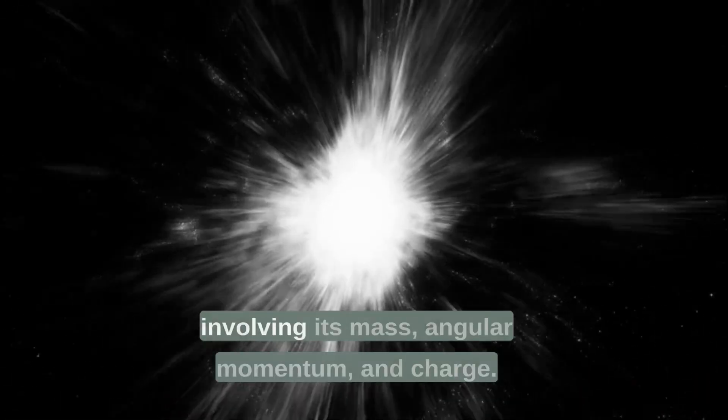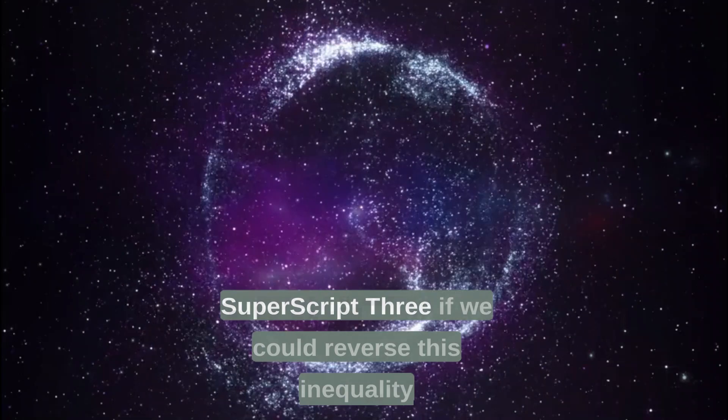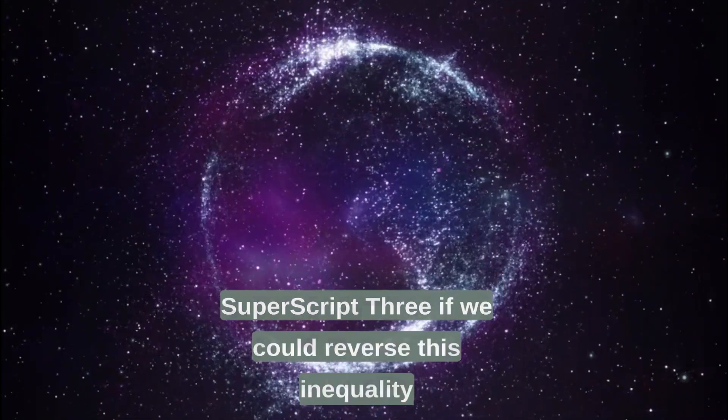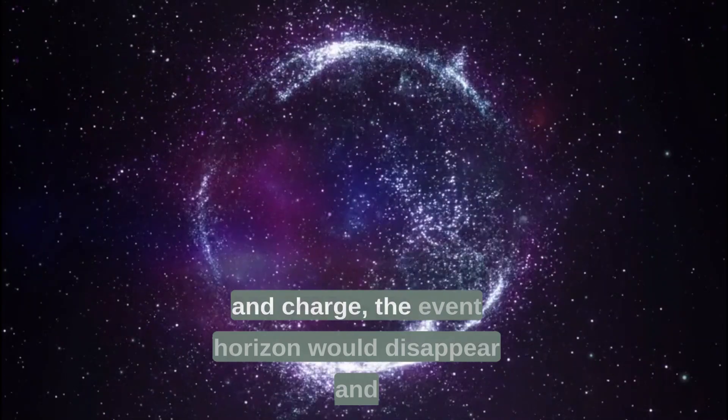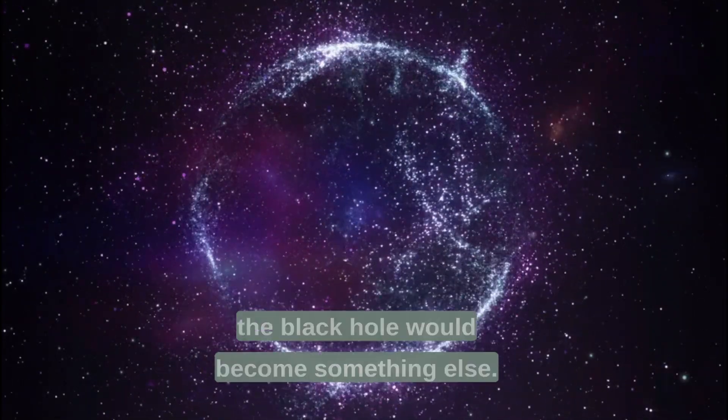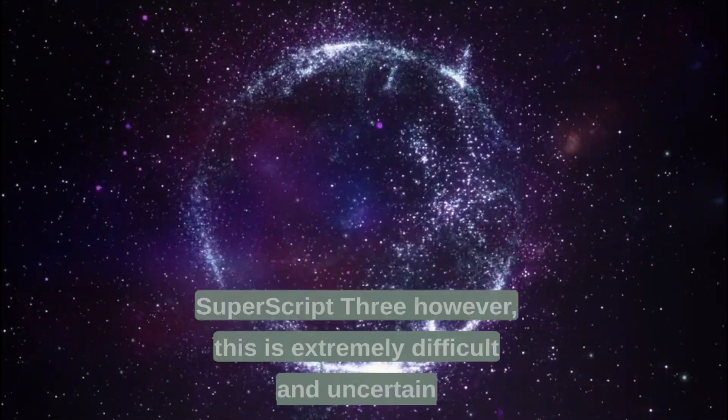This is given by an inequality involving its mass, angular momentum, and charge. If we could reverse this inequality by feeding the black hole enough angular momentum and charge, the event horizon would disappear and the black hole would become something else.